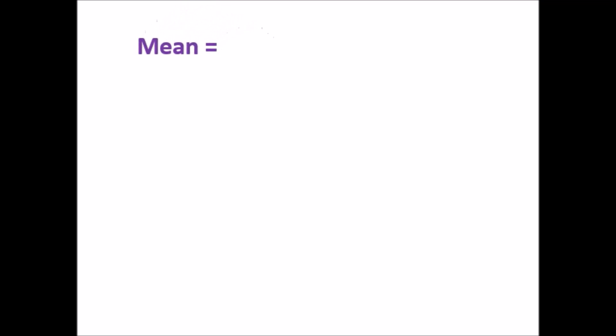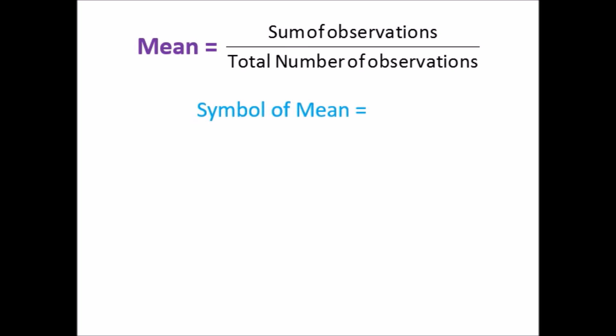Mean is equal to sum of observations divided by total number of observations, and the symbol of mean is X̄. Here, mean equals Σ Xi divided by n, where i varies from 1 to n.